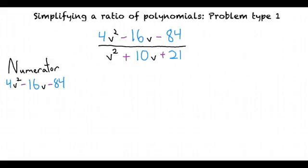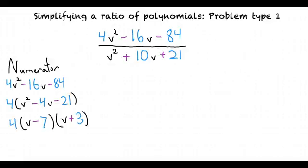Once we factor out the 4, we get 4(v² - 4v - 21). From here, we can use our previous knowledge of factoring polynomials to get 4(v - 7)(v + 3).